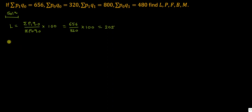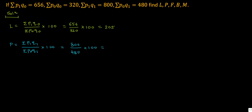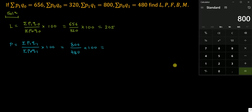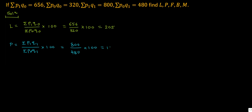Paasche's index number P is equal to sigma P1Q1 upon sigma P0Q1 multiplied by 100. It is equal to 800 divided by 480 into 100. We get 166.67.